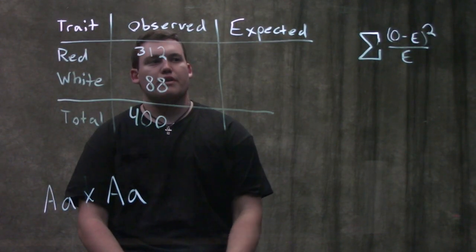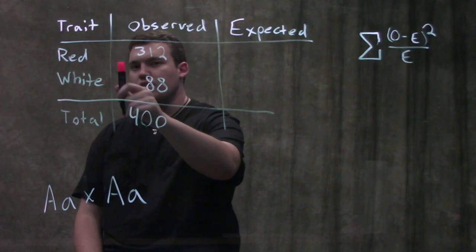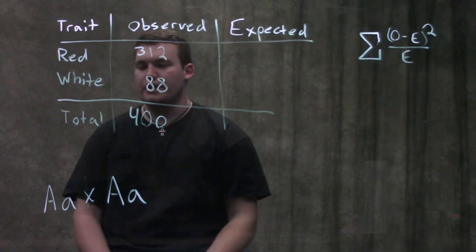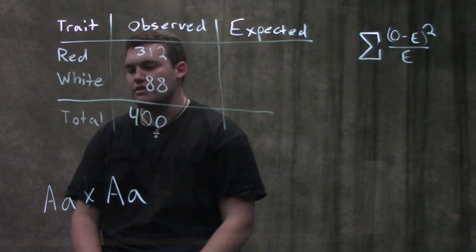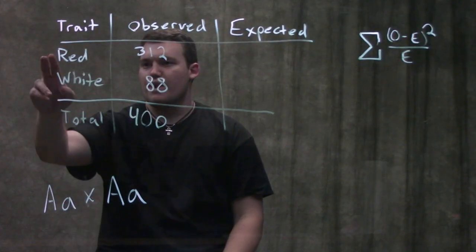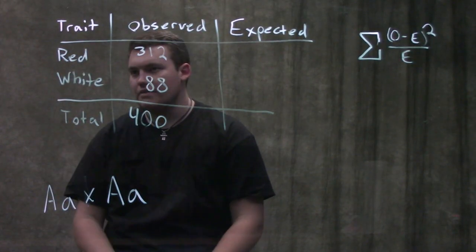What we're gonna do here is we're going to look at our progeny ratios. The problem would say something along the lines of we're gonna cross two heterozygotes, the red allele is dominant to the white allele.